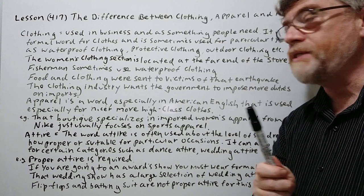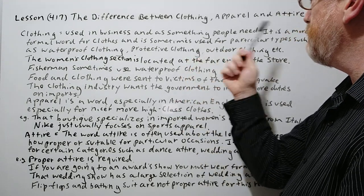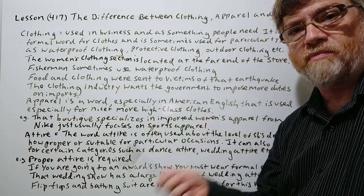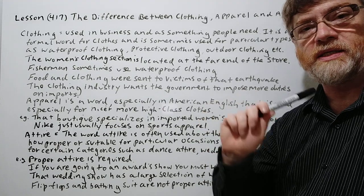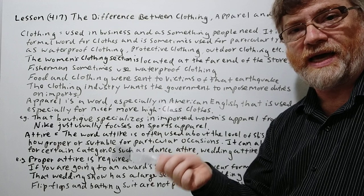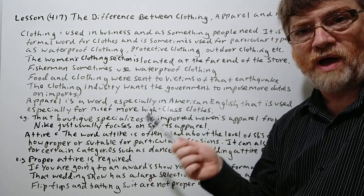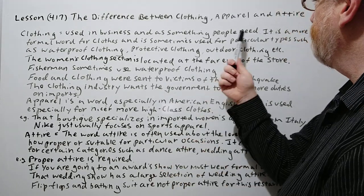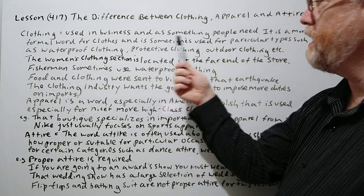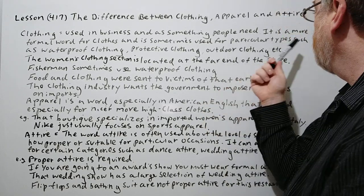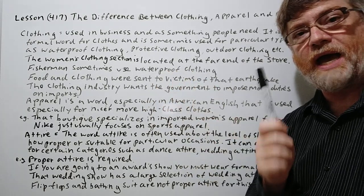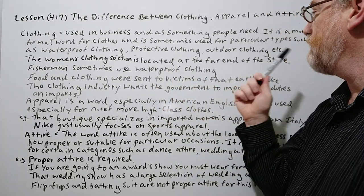Clothing is used in business and as something people need. When you go to an everyday store like Walmart, they might say that's women's clothing, men's clothing, children's clothing. So that's the way we use it for common clothing in business. It is a more formal word for clothes and is sometimes used for particular types such as waterproof clothing, protective clothing, outdoor clothing, etc.